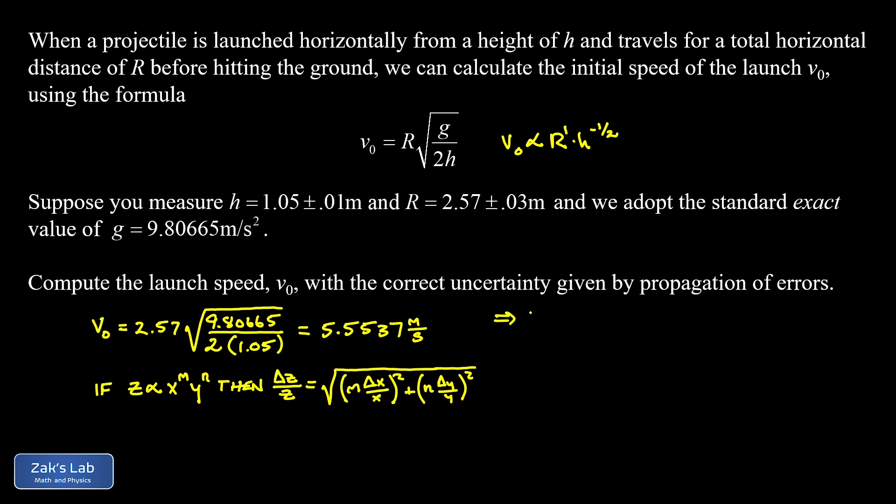So applying this formula, we get the delta v₀ over v₀, the relative uncertainty in the velocity, is given by the square root of, for the variable R, we had an exponent of 1, so I don't even have to write that. So I just get a delta R over R, and the delta R was 0.03, so I have 0.03 divided by 2.57, and I'm going to square that.